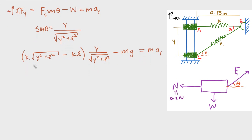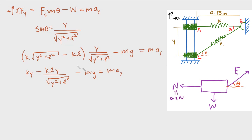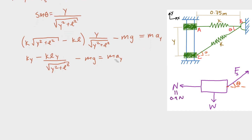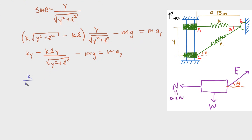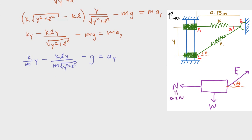Isolating aᵧ by dividing everything by mass m: aᵧ = (k/m)·y − kly / (m·√(y² + l²)) − g. Now all we have to do is plug in the numbers.